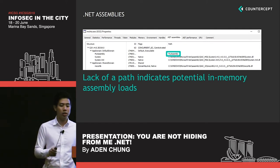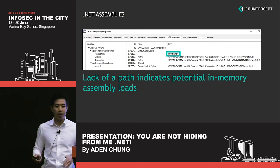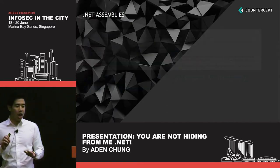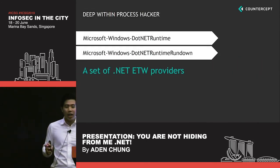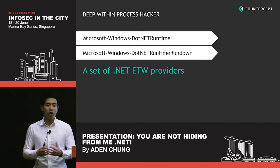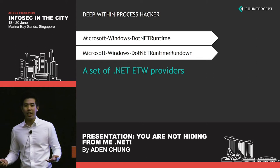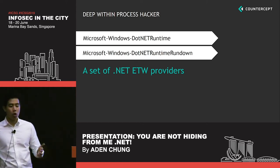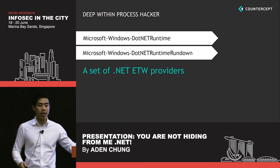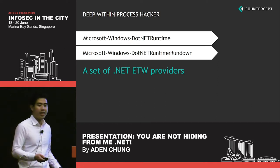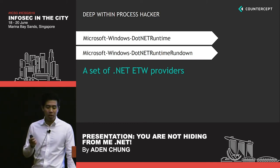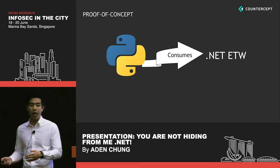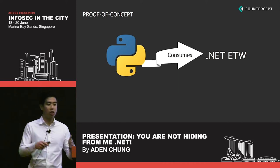We'll touch more on in-memory assembly loads in later slides. But let's ask another question: how did Process Hacker achieve this? It turns out that deep within Process Hacker, it actually utilizes a set of .NET ETW providers. ETW stands for Event Tracing for Windows — essentially, whenever something happens in Windows, it will be logged. Any .NET events will be logged within Windows. This is a wealth of information we can actually leverage on. We at Countercept created a Python POC script by leveraging on FireEye's ETW tracing library to consume these .NET ETW events.